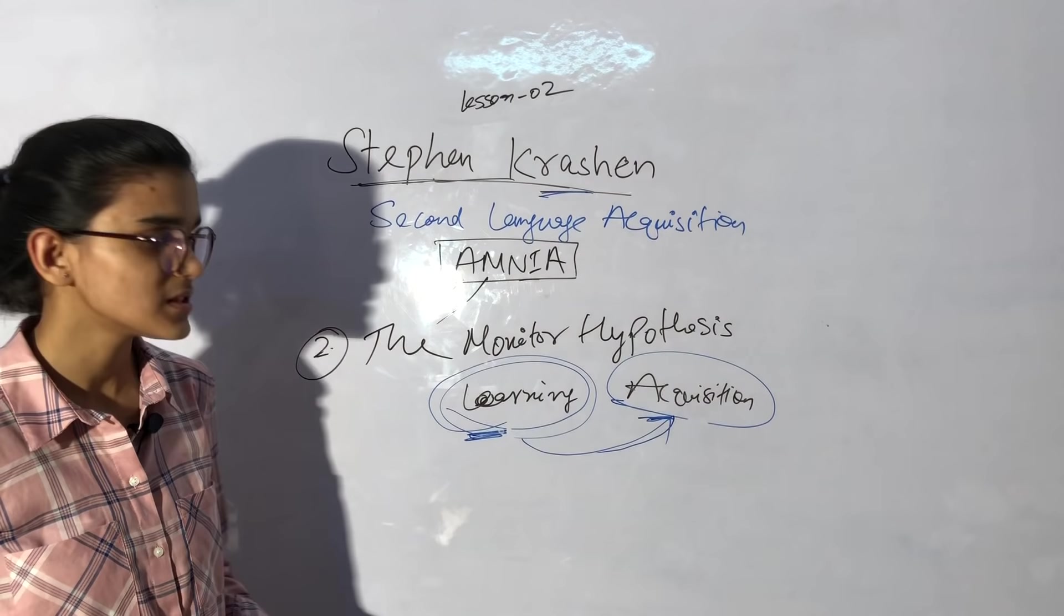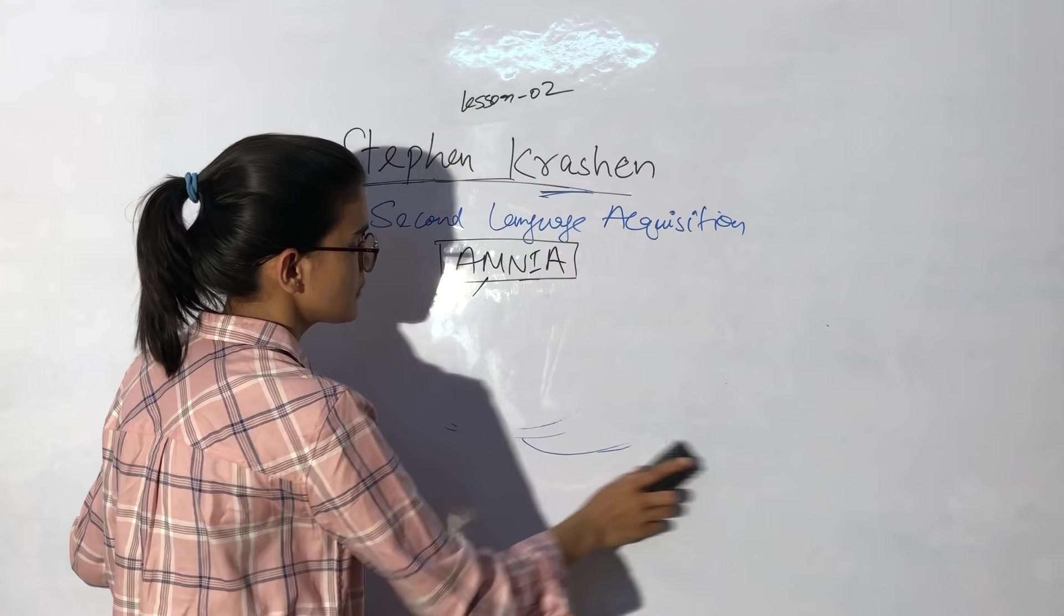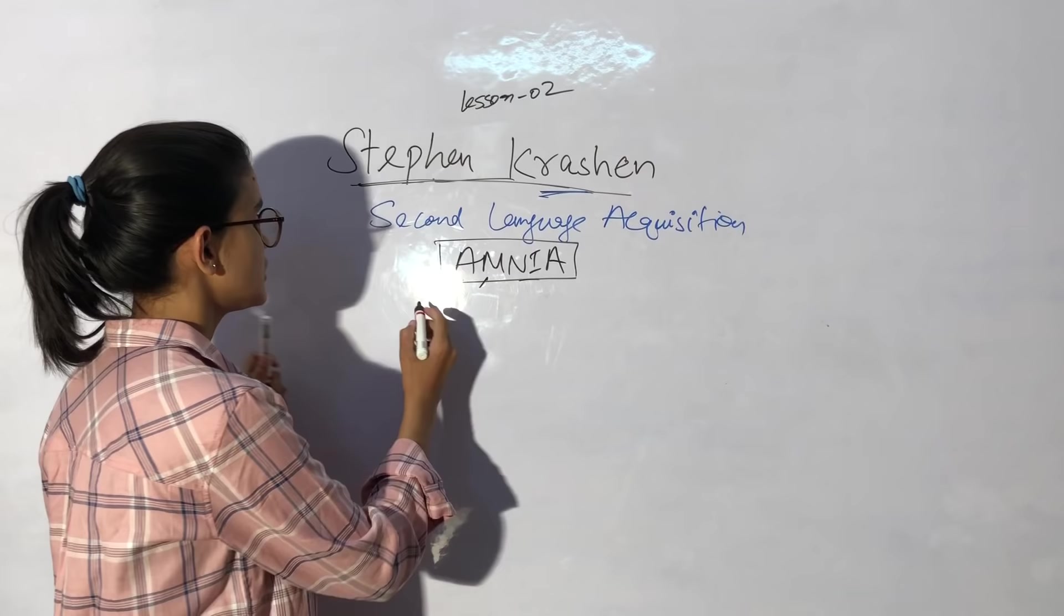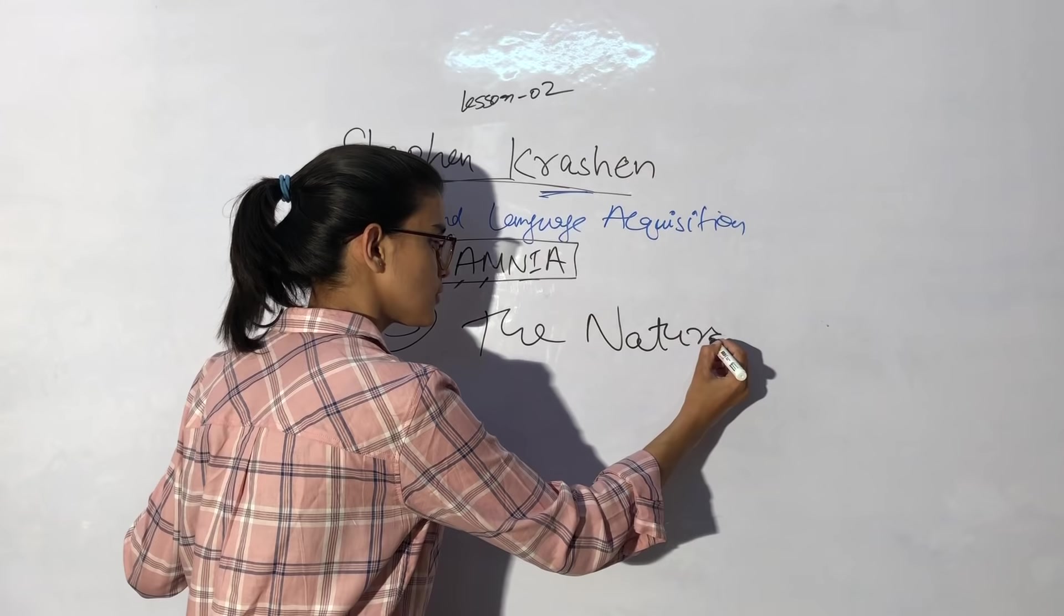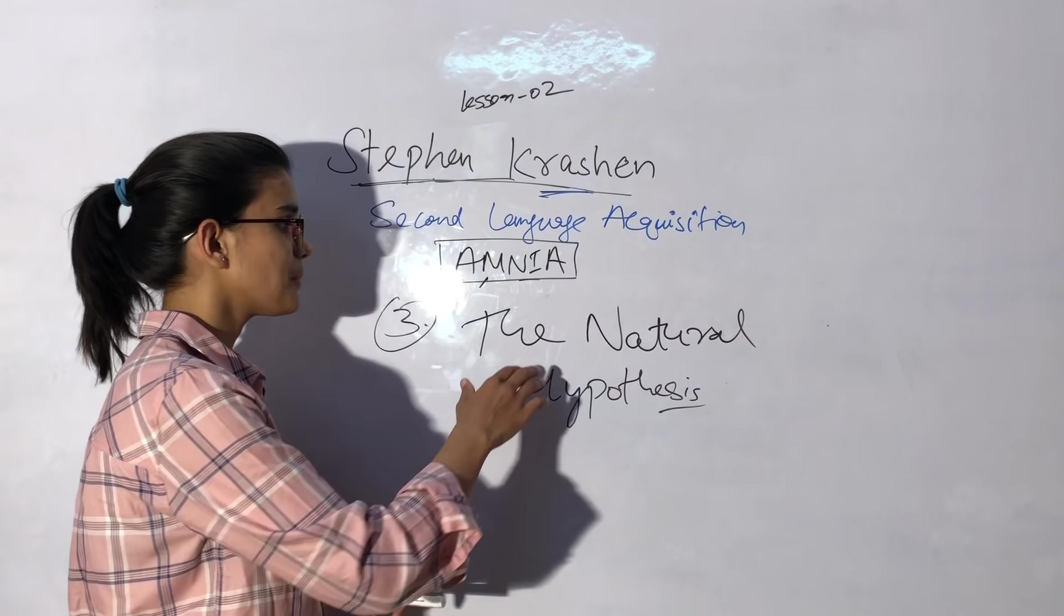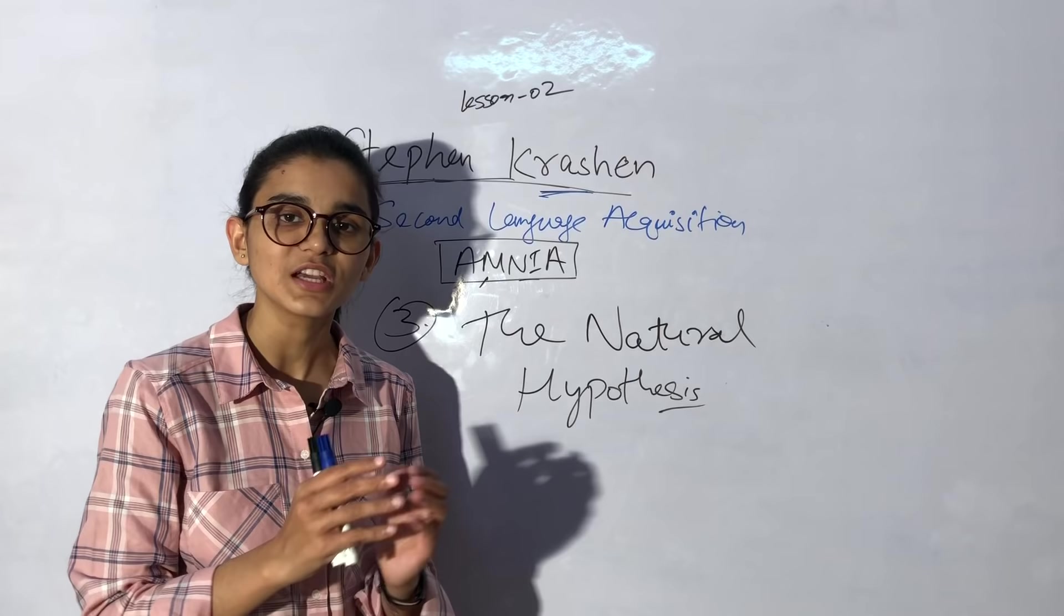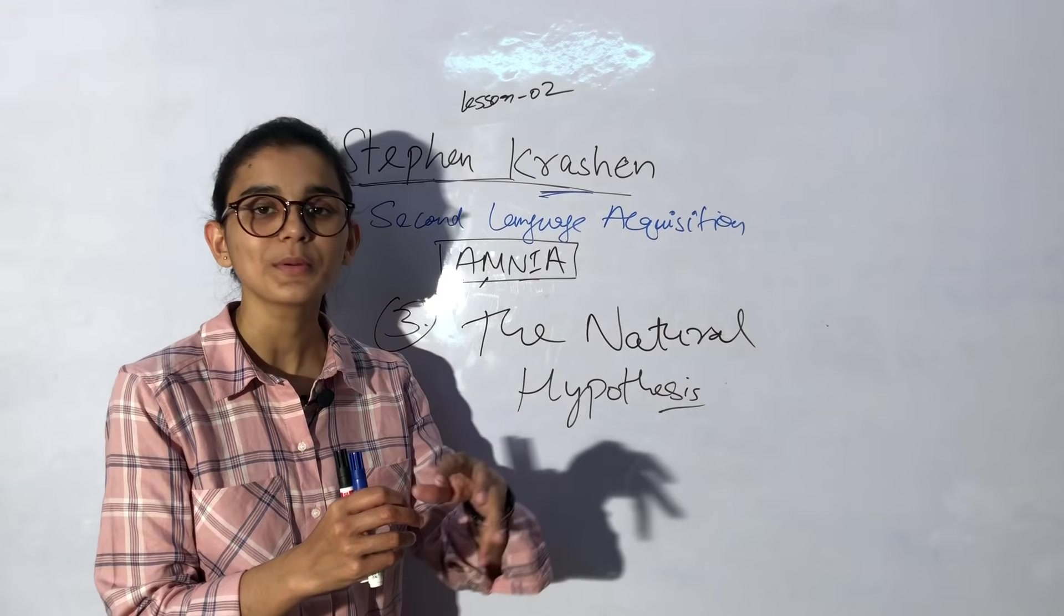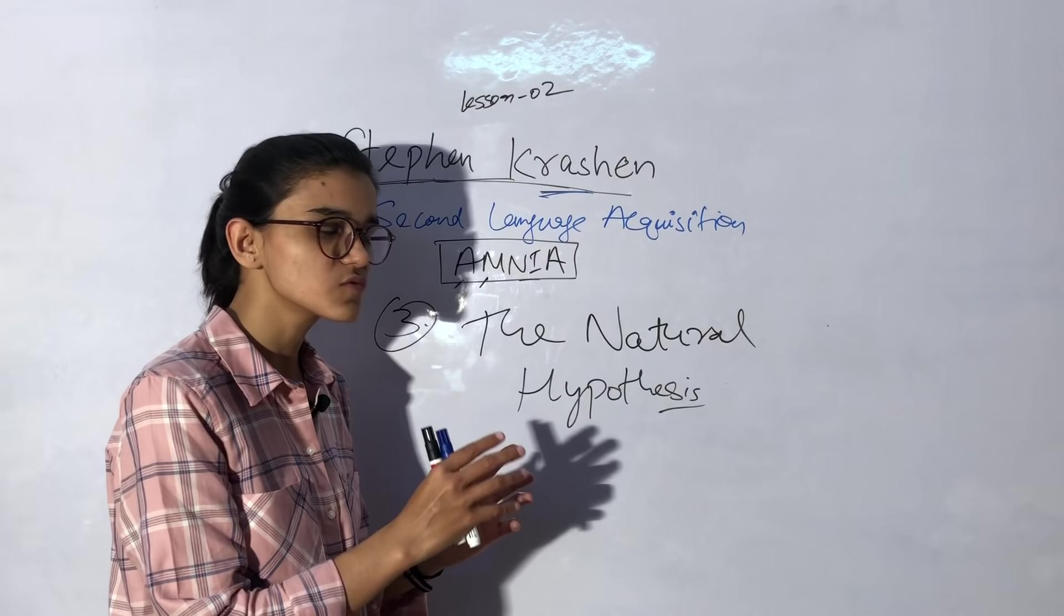Next point, we will go to the third point, which will be an interesting point. The natural hypothesis. Third one is the natural hypothesis. You will learn the language from the natural way. You will not have hope. You will have to learn the rules naturally, in the way they naturally come.